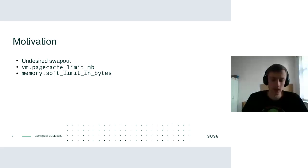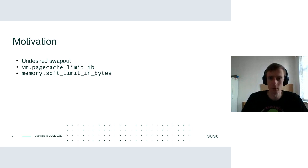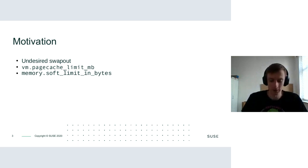Historically there were some approaches to tackle this. One of them is the infamous VM page cache limit that exists in SLES 12 and older, but it doesn't work well because it's hard to configure without breaking something else. The other mechanism was the cgroup attribute soft limit, but that also turned out to be unpredictable for these purposes.